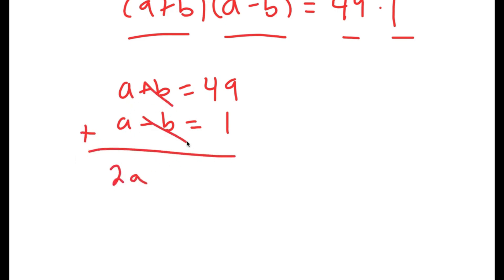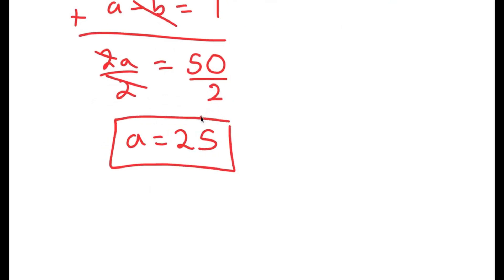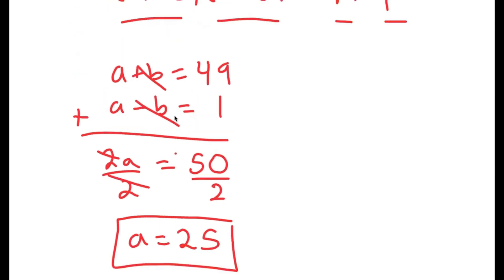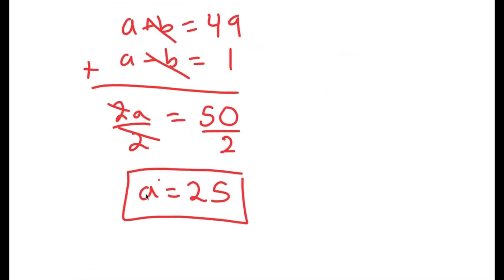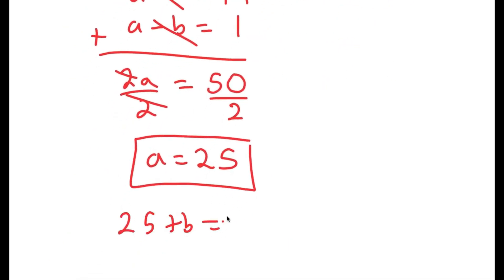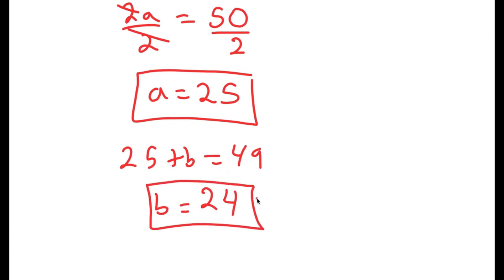Adding the equations: a plus a is 2a, b and negative b cancel out, and 49 plus 1 is 50. So I get 2a equals 50, and dividing both sides by 2, I get a equals 25. Since a plus b equals 49, substituting gives 25 plus b equals 49, so b equals 49 minus 25, which is 24. So a equals 25 and b equals 24.